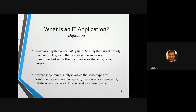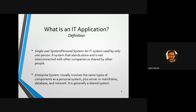The enterprise system has different characteristics — it is a shared system. It usually involves the same concepts as the personal system, plus server, mainframe, database, and network. It is designed for shared use among several users. In the banking sector, we can see this application clearly: several banks can connect their data very easily and share these resources.